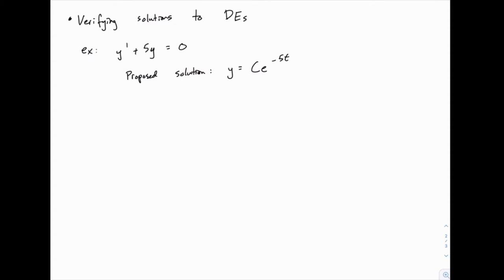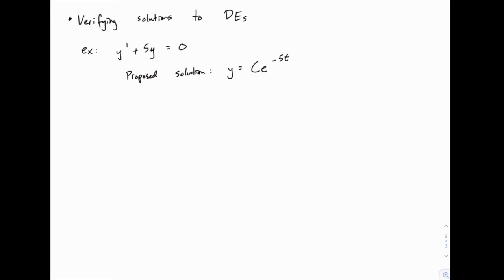We're told that one proposed solution is y equals c e to the negative 5t, and again c is an arbitrary constant. To check this, we need to substitute into this equation y and y prime. We're given a proposed y, and from that we can find the y prime that matches.